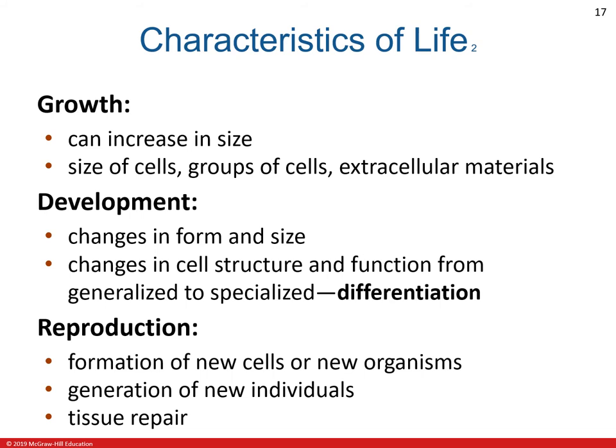Next will be development. Development includes changes in an organism — this may be in the form and the size. Human development begins when the egg is fertilized with a sperm and ends with death. The greatest developmental changes occur before birth, but many changes continue after birth and some continually throughout life. Changes in cell structure and function from generalized to specialized is considered to be differentiation. For example, following fertilization, cells start to specialize to become different cell types, such as skin, bone, muscle, or nerve cells.